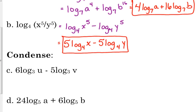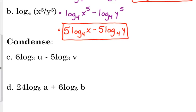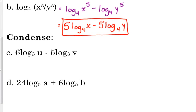Let's look at condensing with multiple properties. Before we can put those two together we have to move the coefficients. Coefficients have to move. So the 6, those becomes an exponent on the u and the 5 becomes an exponent on the v.